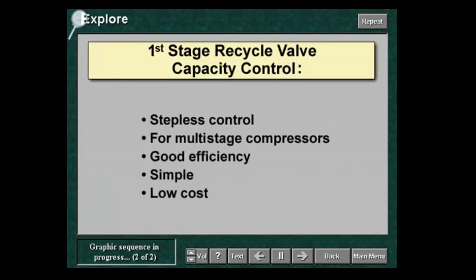The first stage handles 100% of the gas under capacity control, but the following stages handle only the reduced flow rate. Therefore, the efficiency of the system is good and increases with the number of stages. First stage recycle is simple and of low cost.